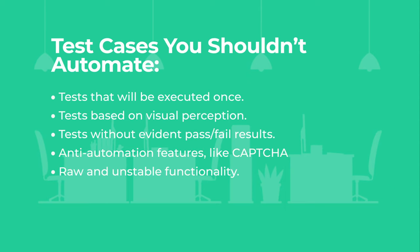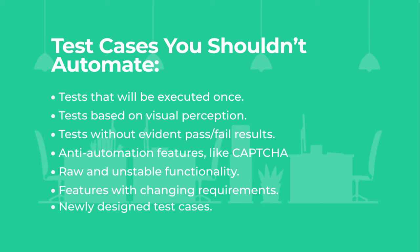Other cases unsuitable for automation include anti-automation features like CAPTCHA, raw and unstable functionality, test cases for functionality with changing requirements, and newly designed test cases that haven't been executed manually yet. Automating these things can take a lot of time and the results won't be accurate.